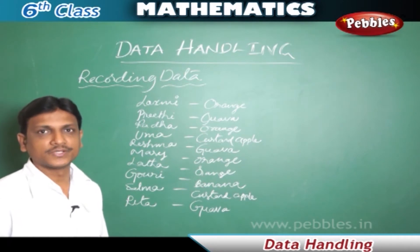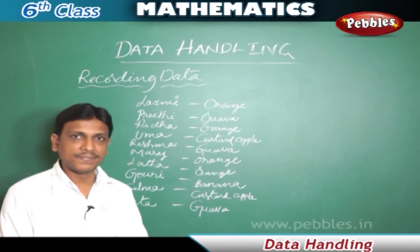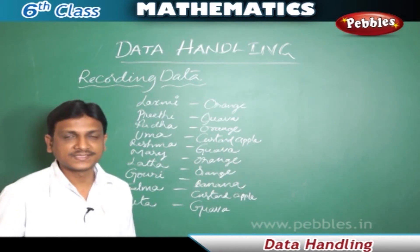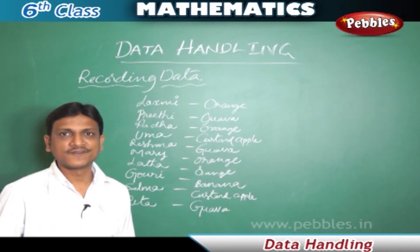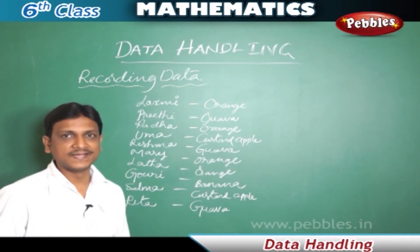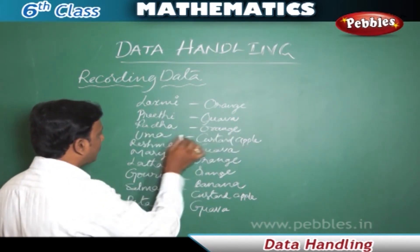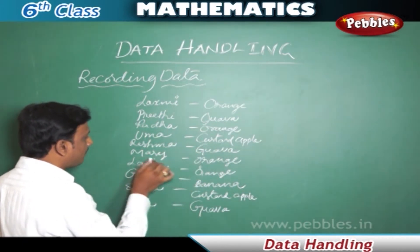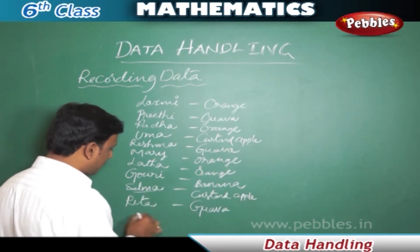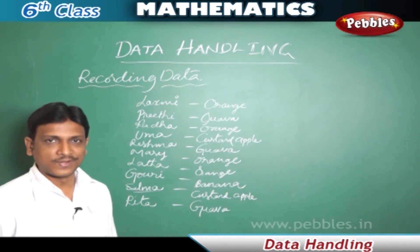Now we will see an example to understand how to record data. Lakshmi is getting ready for her picnic and wanted to gift favorite fruits to her friends. Her mother asked her to find out what her friends' favorite fruits were. Lakshmi collected information and prepared a list: Lakshmi - orange, Preeti - guava, Rada - orange, Tuma - custard apple, Reshma - guava, Mary - orange, Lata - orange, Gauri - banana, Salma - custard apple, Rita - guava.